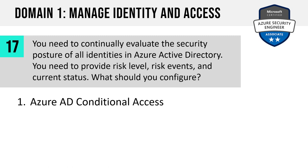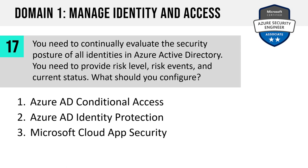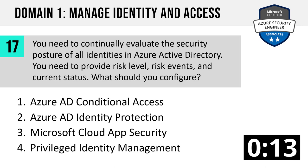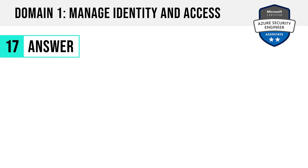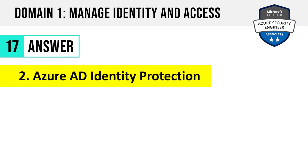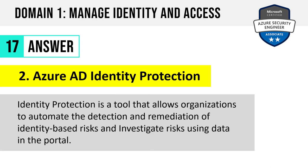Question 17. You need to continue to evaluate the security posture of all identities in Azure Active Directory. You need to provide risk level, risk events, and current status. What should you configure? Azure AD Conditional Access, Azure AD Identity Protection, Microsoft Cloud App Security, or Privileged Identity Management? The answer is two: Azure AD Identity Protection. It's a tool that allows organizations to automate the detection and remediation of identity-based risks and to investigate risks using data in the portal.